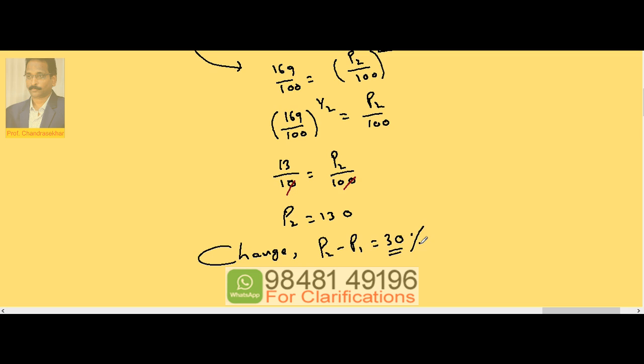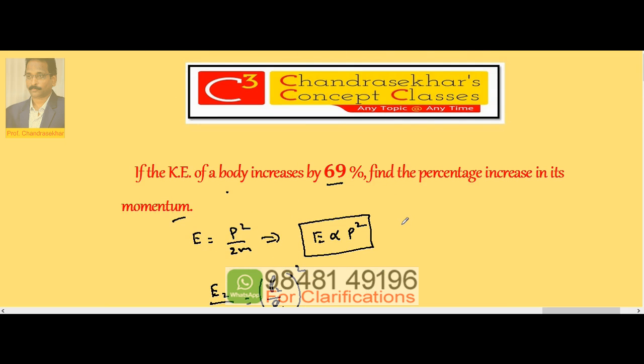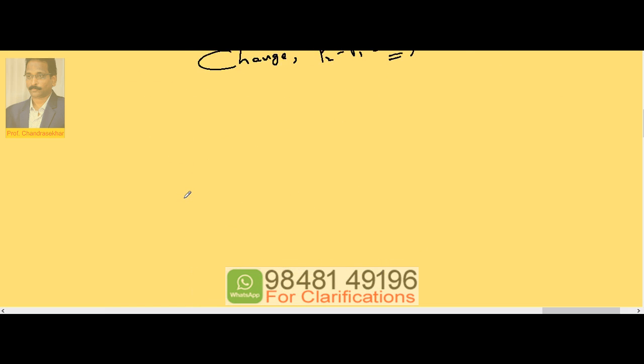Since the change is for hundred, it is called a percentage change. That means when the kinetic energy increases by 69 percent, the corresponding percentage increase in momentum is 30. Now let us generalize this case. Whenever we take a relation of the kind y proportional to x square, any relation...